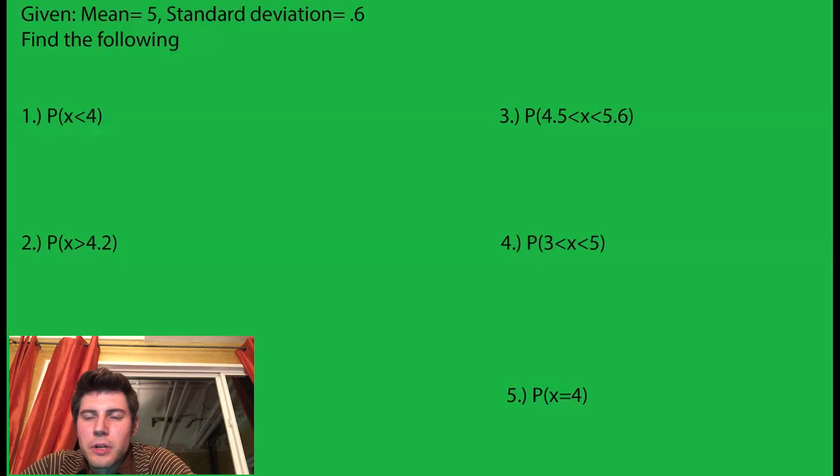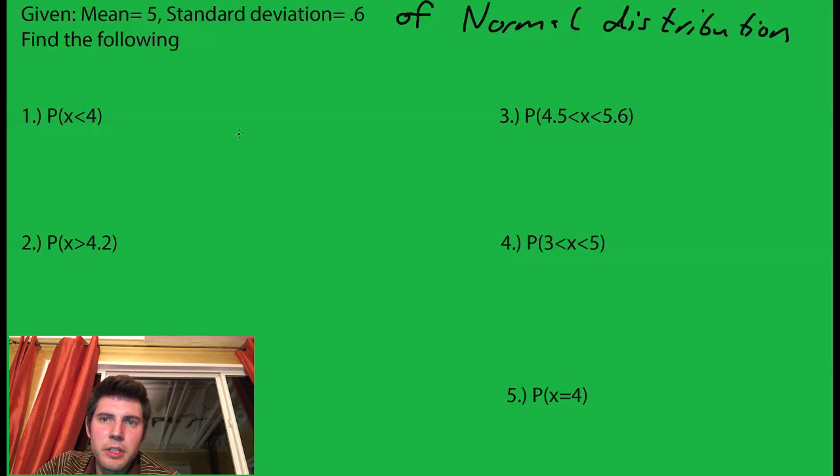Hey guys, so we're going to solve a couple problems using the z table. I'm going to give you the mean and the standard deviation of a normal distribution. How do you find the probability that x is less than 4 if the mean is 5 and the standard deviation is 0.6? Well first we want to find the z score.